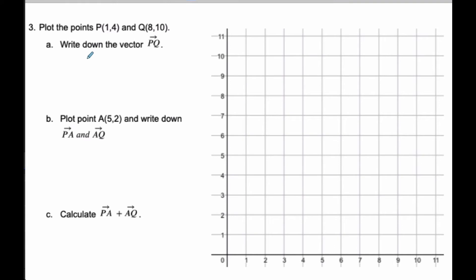Looking at the next example, let's consider this. We're going to write down vector PQ. First let's draw this out. I have (1,4) is P, and I have (8,10) is Q here. And so my vector PQ is here.